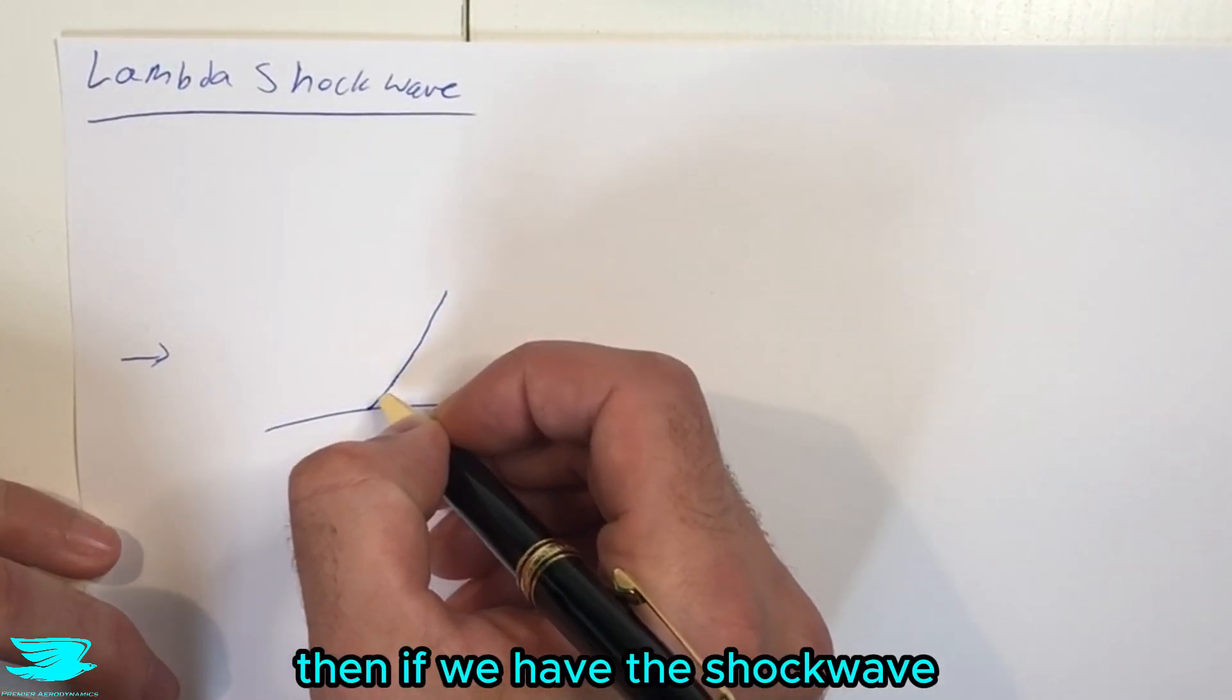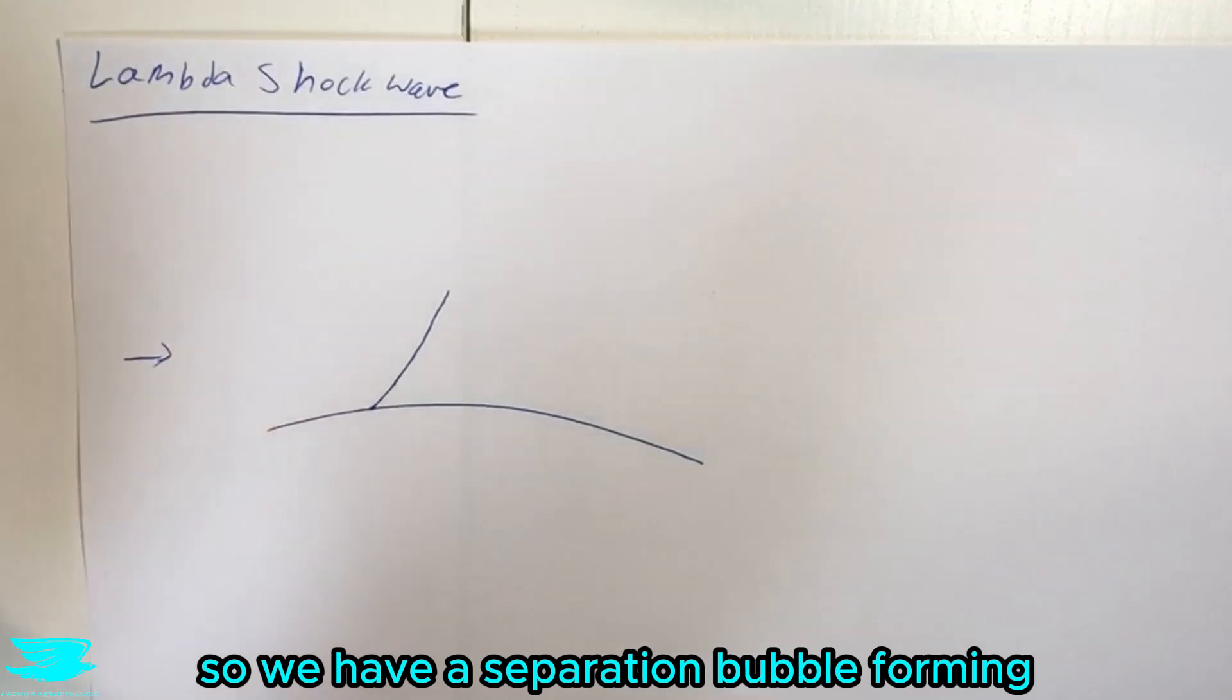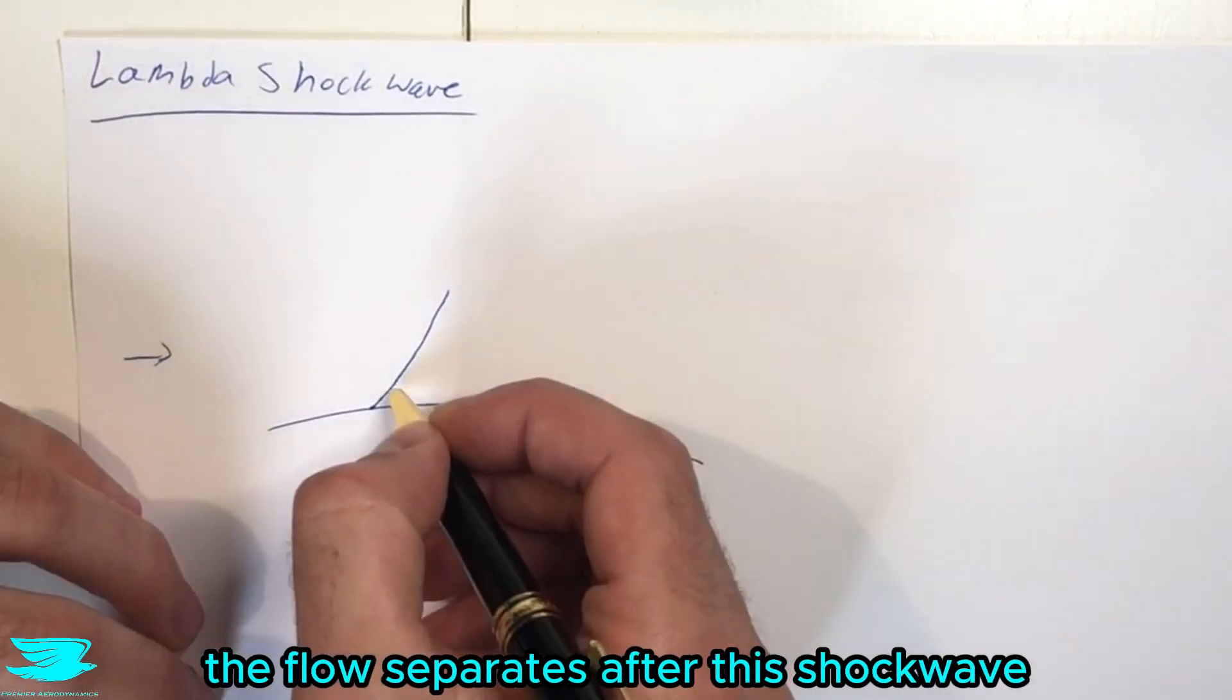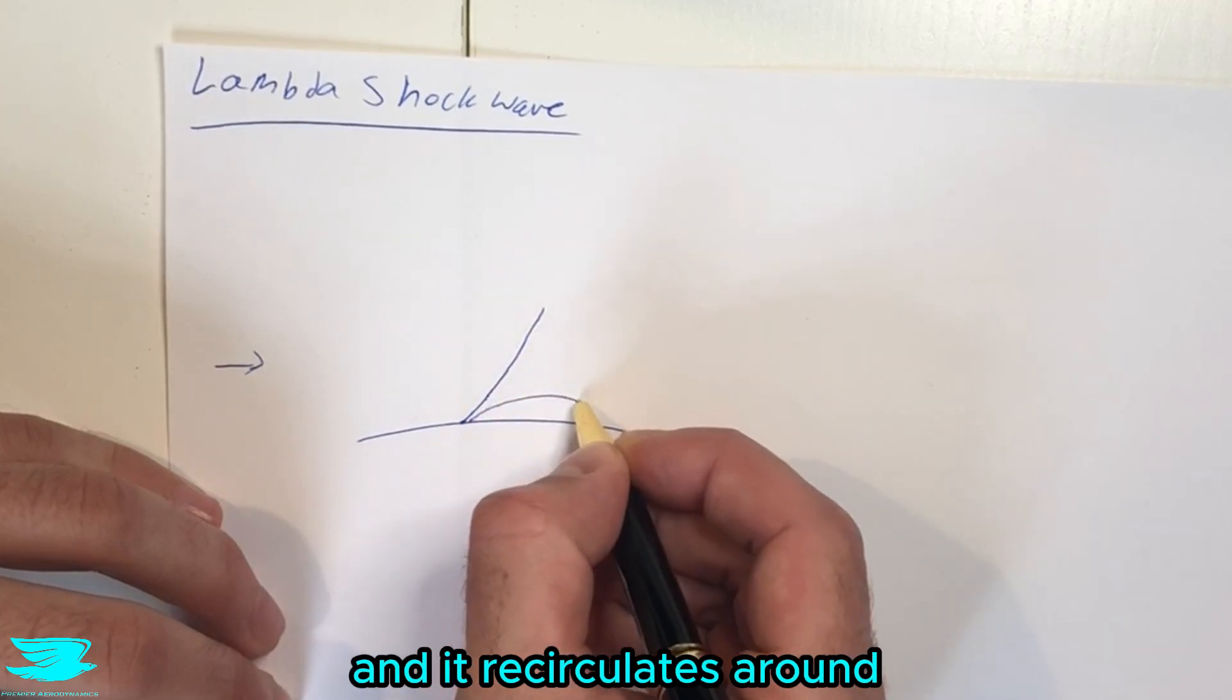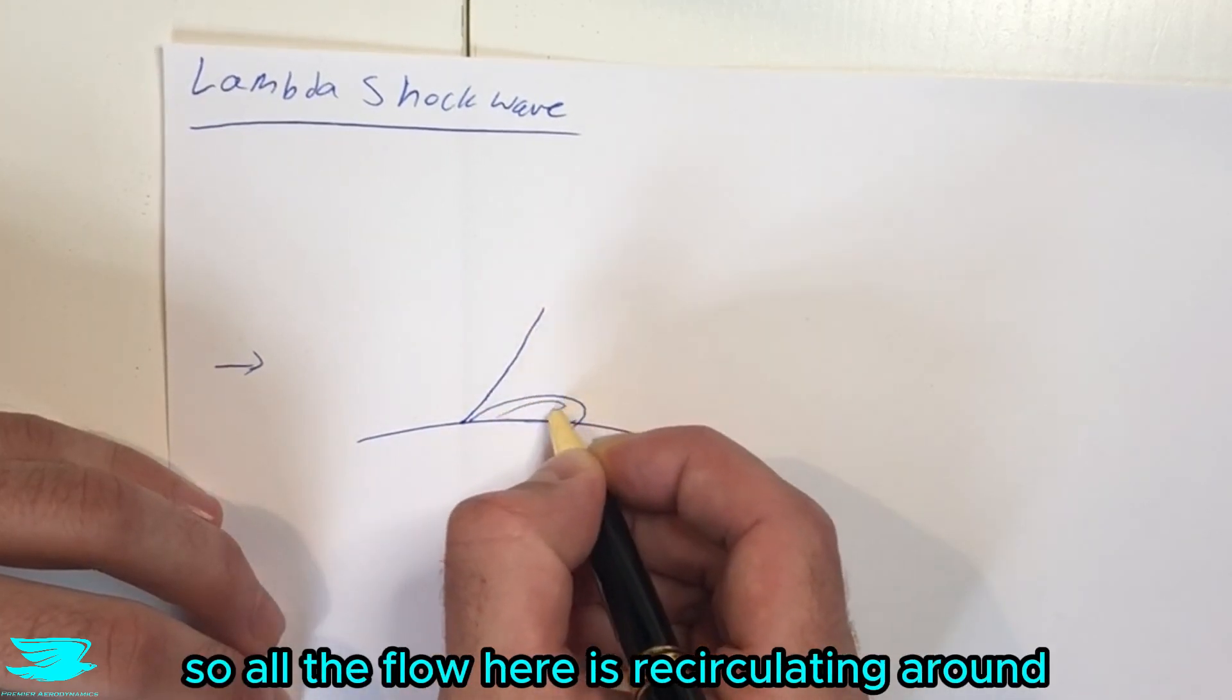Then if we have the shockwave and it triggers transition, we have a separation bubble forming, the flow separates. After this shockwave, we then get this bubble here, and it recirculates around. So all the flow in here is recirculating around.